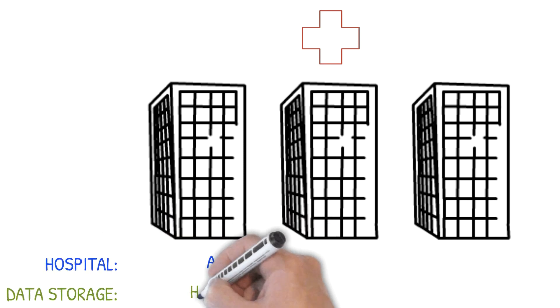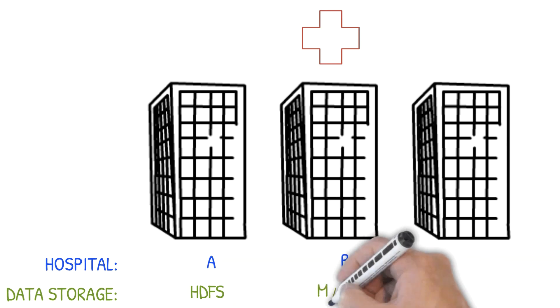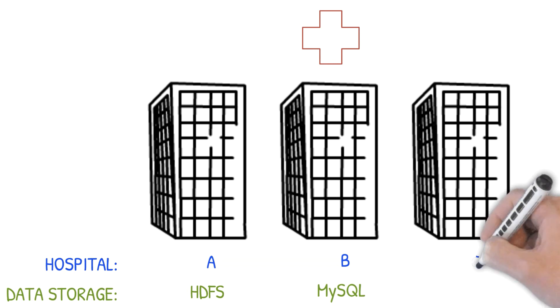Hospital A stores raw resource data on HDFS. Hospital B stores raw resource data on MySQL. And Hospital C has the raw resource data on Kafka storage, which it only retains for about seven days. Hospital C only stores processed data on permanent storage, but we want access to the raw data. And each of these systems have petabytes and petabytes of data.